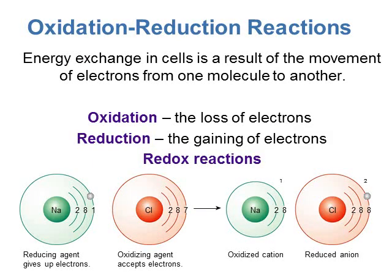When cells want to exchange energy from one molecule to another, they do something called an oxidation-reduction reaction. Energy exchanged in cells results from the movement of electrons from one molecule to another. We'll see this later when we get to metabolism, specifically photosynthesis and cellular respiration. In these redox reactions, one molecule is oxidized — it loses an electron — and that electron moves to a second molecule, which is reduced, meaning it gains an electron. You can call them redox reactions for short.